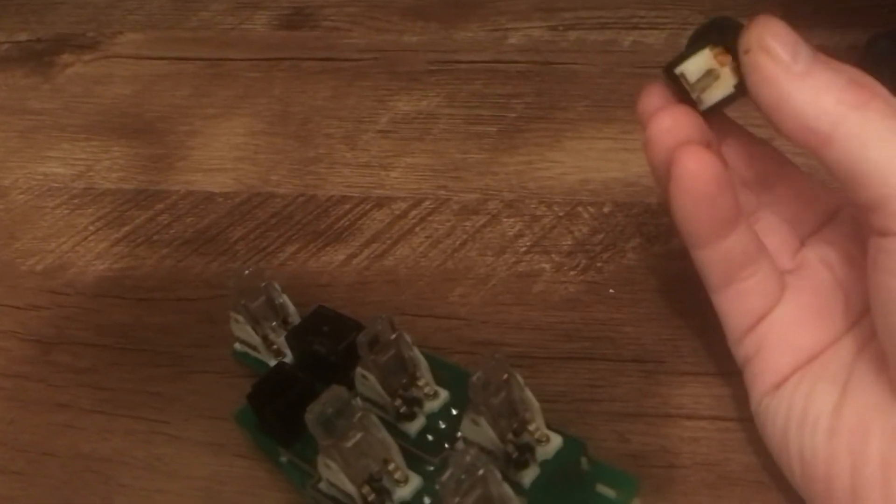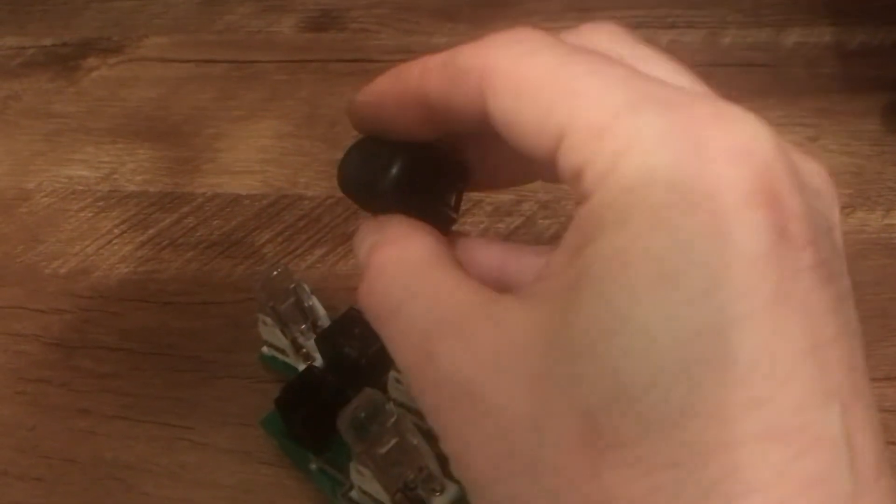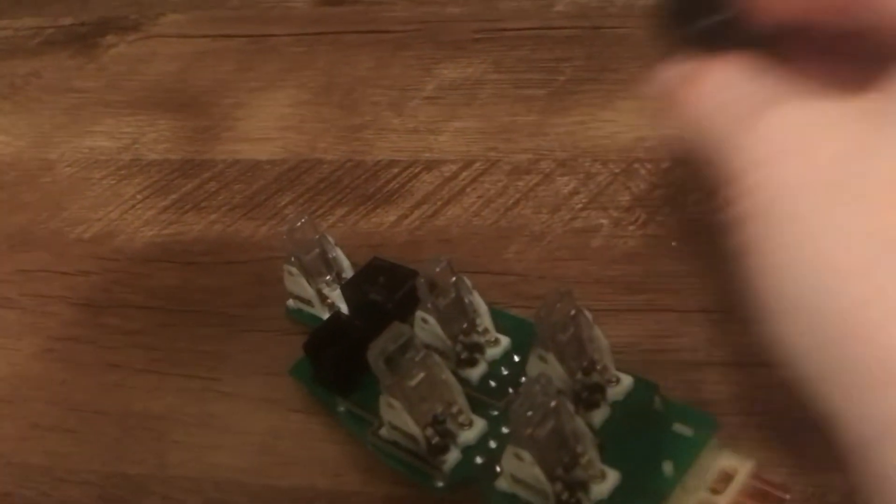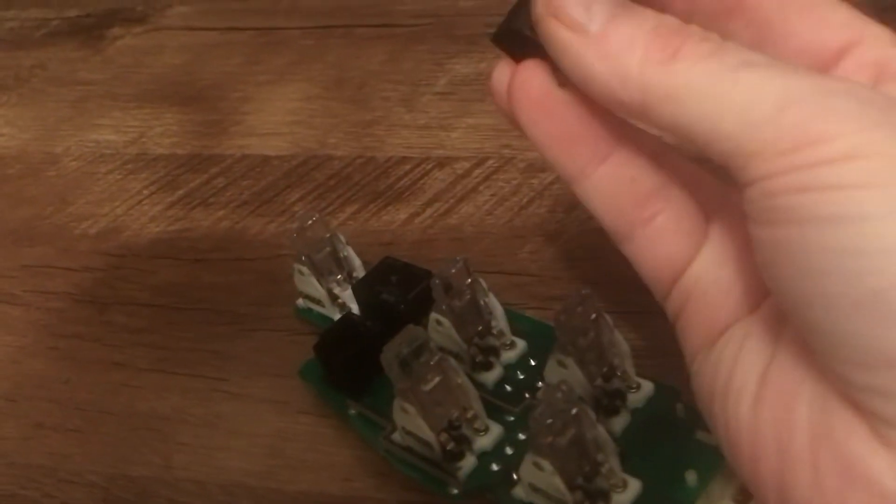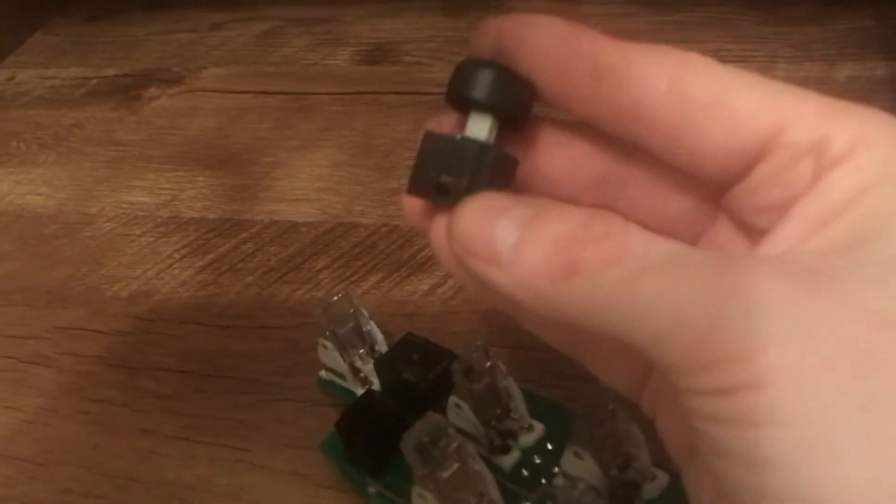When this gets dirty, when it's up it won't make good contact, and the passenger window switches won't work on the other doors. Now you can take this apart and clean it, or you can try and spray Deox-IT in there without taking it apart.